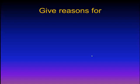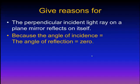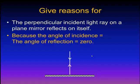We have an important question here. Give reasons for: the perpendicular incident light ray on a plane mirror reflects on itself. Because the angle of incidence is equal to the angle of reflection, which equals zero. If we have a plane mirror and the incident light ray is falling perpendicular on the plane mirror, it will reflect on itself with an angle equal to zero.